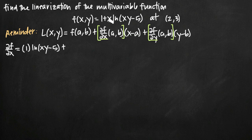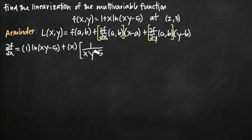Then we add the opposite situation: we leave x as it is, and multiply by the derivative of natural log of (xy - 5). To take that derivative we use chain rule. The outside function is natural log, and the inside function is (xy - 5). So we get 1 over (xy - 5) — that's the derivative of the natural log part — leaving the inside completely alone. Then we multiply by the derivative of the inside function with respect to x, which is just y, since y acts as a coefficient on x. The derivative of negative 5 is 0.